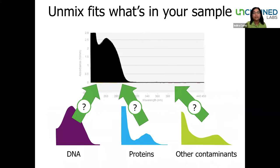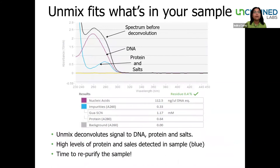In addition to choice of background correction method, Lunatic offers another advanced analytic capability called OnMix. What OnMix does is identify the presence of common contaminants in the sample. The software analyzes the sample spectrum, then applies specific algorithms that deconvolute that information to reveal contaminants based on their characteristic spectrum. Here's the result of a DNA sample analyzed with OnMix. The black line represents the spectrum before deconvolution. OnMix identifies excess protein and salts — that's the blue line shown here. In the results table, the salt present is identified as guanidine thiocyanate. This sample would likely have to be repurified before using it in a downstream application.